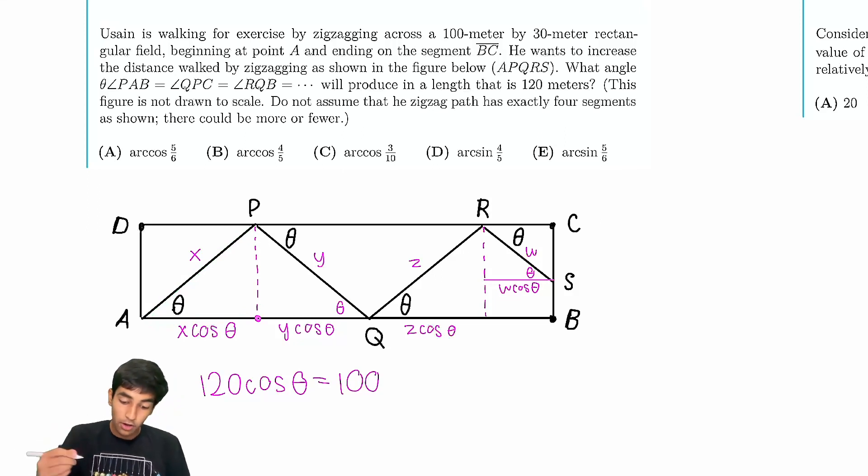The cosine theta is just 100 over 120, which is 5 sixths. So the answer is just arccosine 5 sixths. Thanks for watching this video.